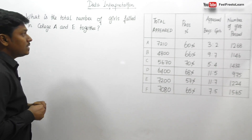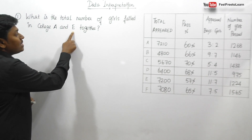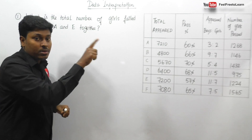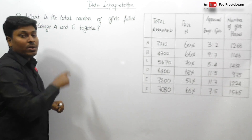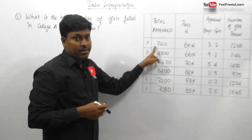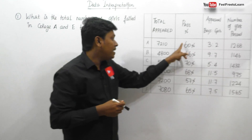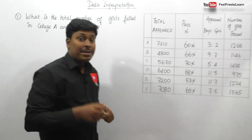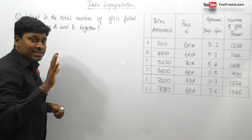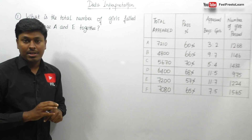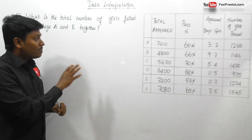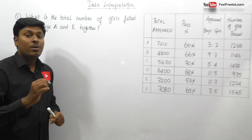Question number one: what is the total number of girls failed in college A and college E together? Our target is to find the total number of girls who failed — not passed — in college A and college E together. I am not going to teach you a shortcut; I am going to teach you the normal traditional method, because this method will definitely help you for all the complex questions.